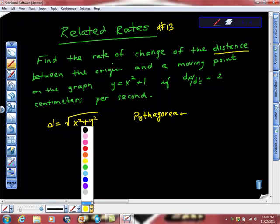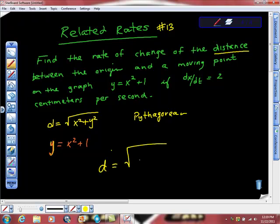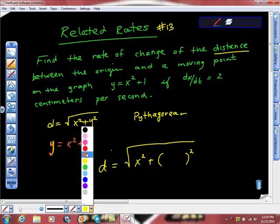The other equation that we have, we're going to need two, is the one that they give us. And the one that they give us is that y is equal to x squared plus 1. So all I'm going to do is combine the two equations. So I'm going to say that our function, distance, is equal to x squared plus y squared. And where I'm going to get my y is right here. This is y. It says y is this value. So it's x squared plus 1.